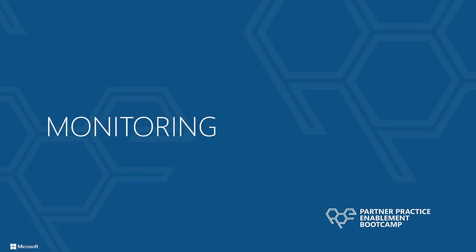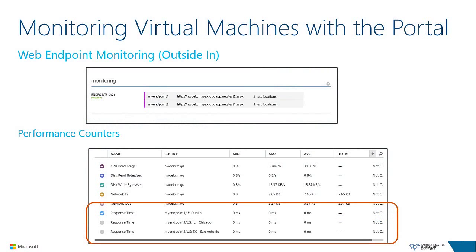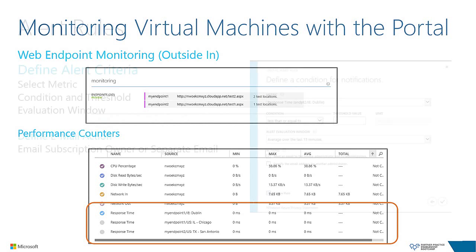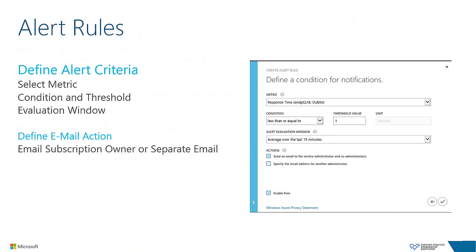Windows Azure Management Portal supports two types of monitoring natively: outside-in monitoring on your virtual machine's public endpoints, and monitoring a subset of performance counters such as CPU utilization, disk, and network I/O. Based on these monitoring capabilities, you can specify alerts based on a condition and threshold that you control. If the alert conditions are hit, Windows Azure can automatically send an email to the administrators of the subscription or a specific email address.